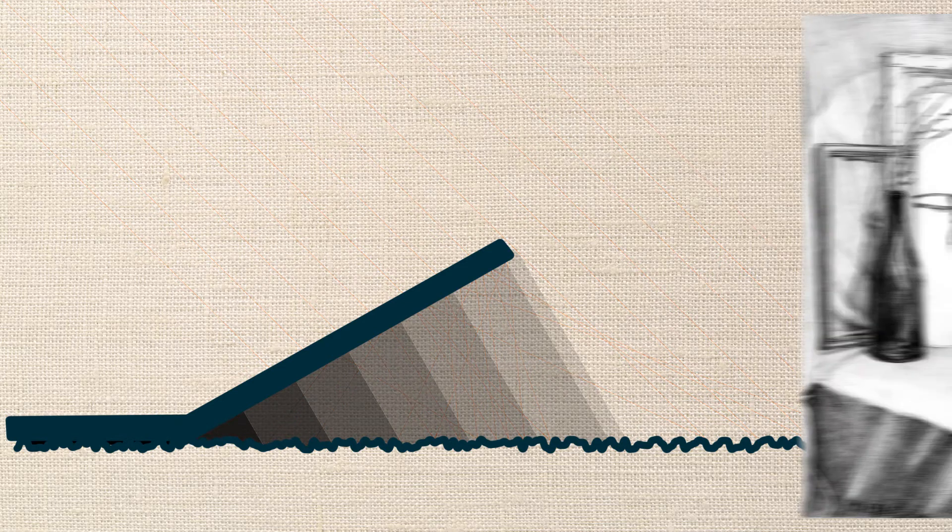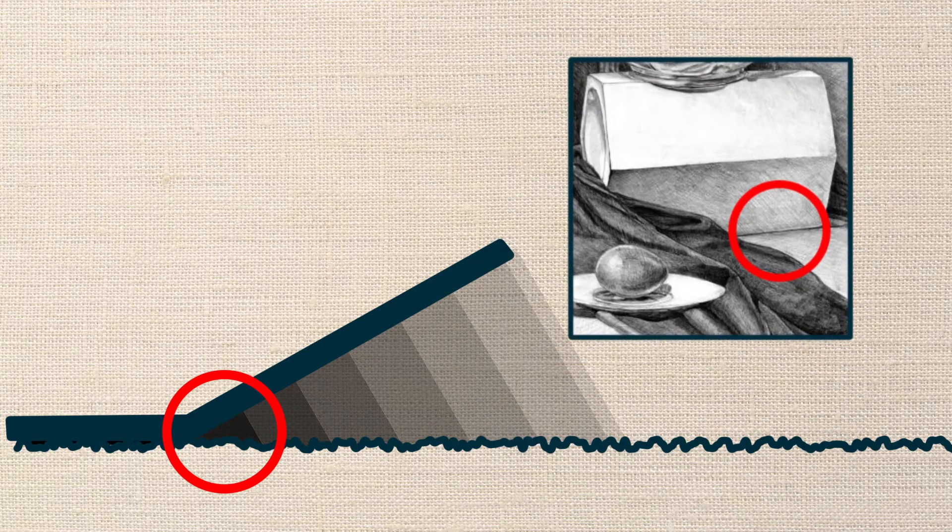In that place where the object and the ground are in contact, not a single ray reaches. Therefore, the line of contact between the object and the ground can be drawn as dark as possible.